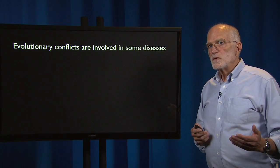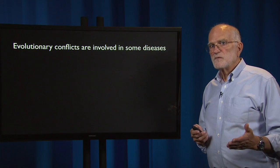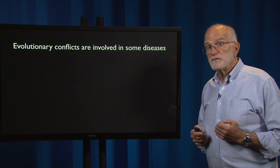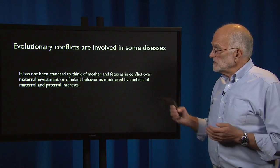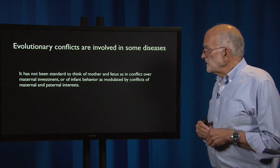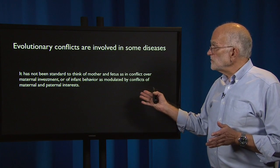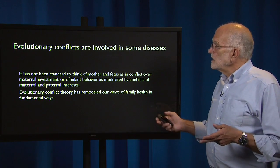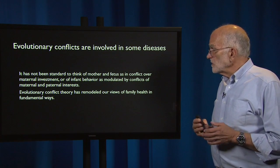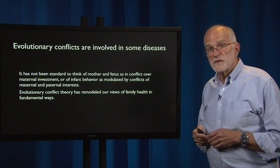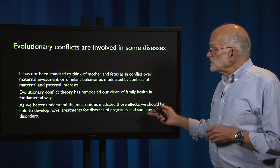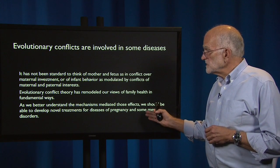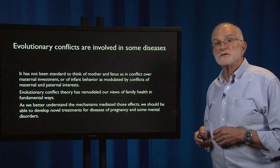Another way of looking at the world that is not part of classical medicine is that of conflict, and evolutionary conflicts are involved in some diseases. For example, it has not been standard to think of mother and fetus as in conflict over maternal investment, or if infant behavior is modulated by conflict of maternal and paternal interests. Evolutionary conflict theory has remodeled our views of family health in very fundamental ways. As we better understand the mechanisms that mediate those effects, we should be able to develop novel treatments for diseases of pregnancy and perhaps of some mental disorders.